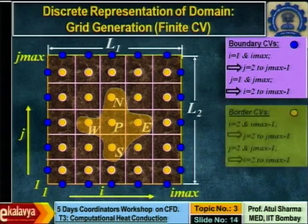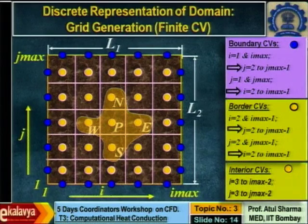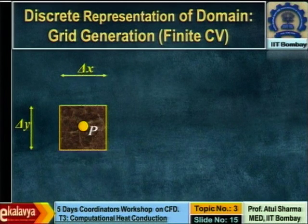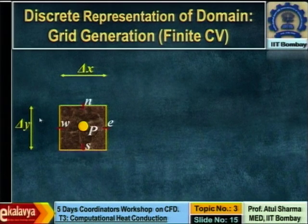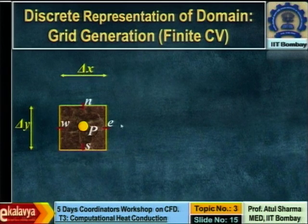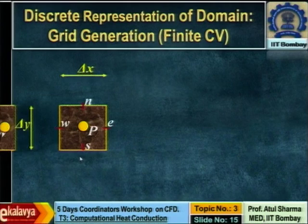This is a typical computational stencil involved in the algebraic equation. There are boundary control volumes and interior control volumes. From the grid generation step we know the x and y coordinates of the vertices of each control volume, from which we calculate geometrical parameters. The control volume has four faces — in CFD we call them the west face, east face, south face, and north face. Small letters represent face centers and capital letters represent neighboring cell centers: W is the west neighbor, E is east, N is north, S is south.